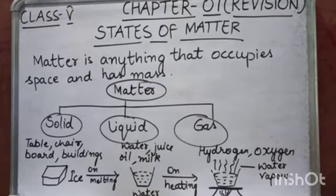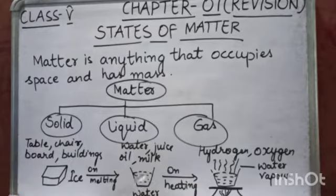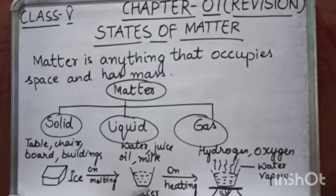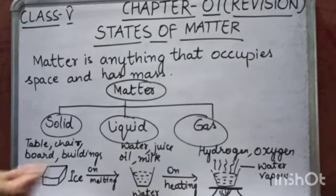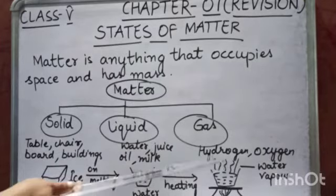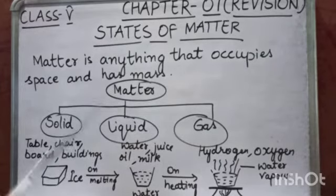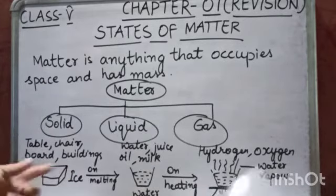There is an interesting fact that these three states of matter can interchange. For example, ice is a solid form of water. Ice on melting at room temperature changes into water, which is the liquid form. On heating, liquid changes into gaseous form — water on heating changes into water vapour, which is nothing but the gaseous form of water. This is how states of matter can interchange.